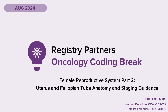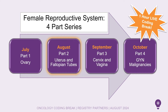Hello and welcome to the August Oncology Coding Break. My name is Heather Donahue, and Melissa Matter will be joining us today for Female Reproductive System Part 2, Uterus and Fallopian Tube Anatomy and Staging Guidance. As a reminder, this is a four-part series, so if you missed Part 1 in July on Ovary Anatomy and Staging Guidance, you can head over to our YouTube channel to check that out.